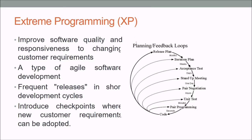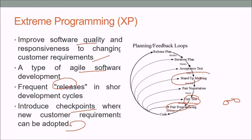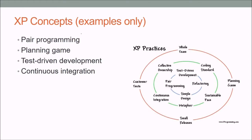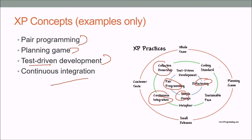Extreme Programming (XP) aims to improve software quality and responsiveness to changing customer requirements. It is a type of agile development featuring frequent releases in short development cycles, pair programming, test-driven development where tests are written first, continuous integration, and stand-up meetings. Key XP concepts include: pair programming, planning game, refactoring, simple design, continuous integration, collective ownership, coding standards, sustainable pace, small releases, customer tests, and whole team involvement.